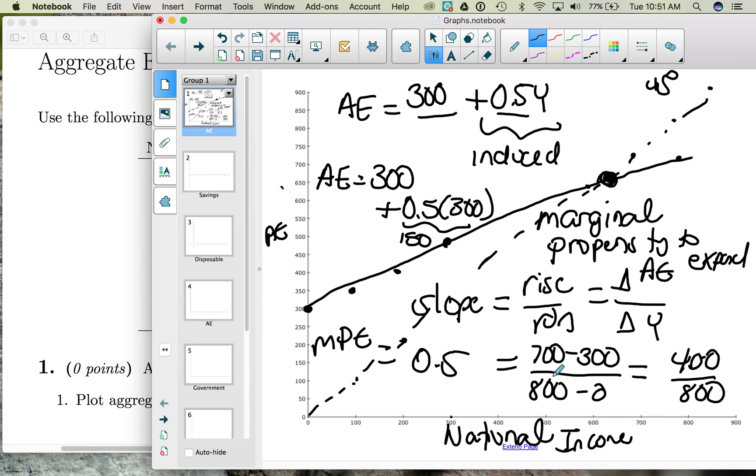And notice that it shows us the points where income is equal to aggregate expenditures. So for this economy, national income equals aggregate expenditures when the economy has an income level of 600. This is our equilibrium. This is our equilibrium size to our economy.